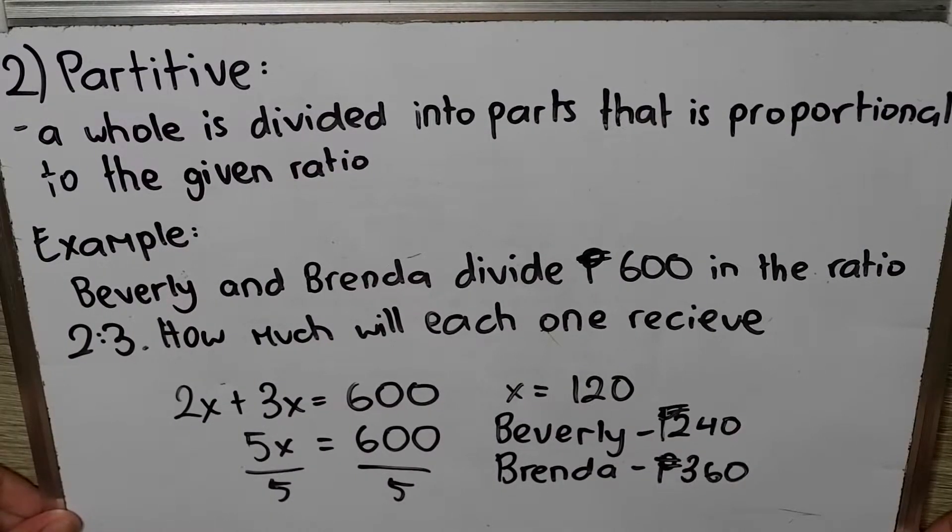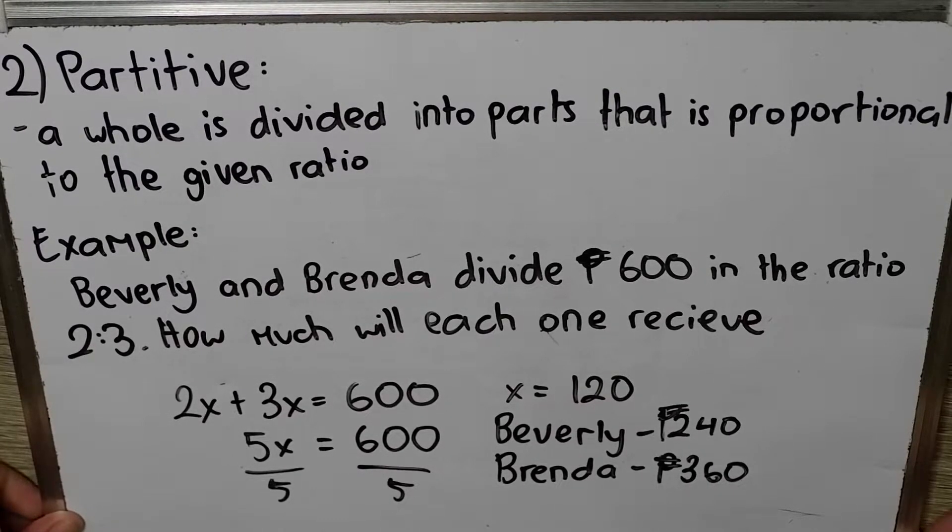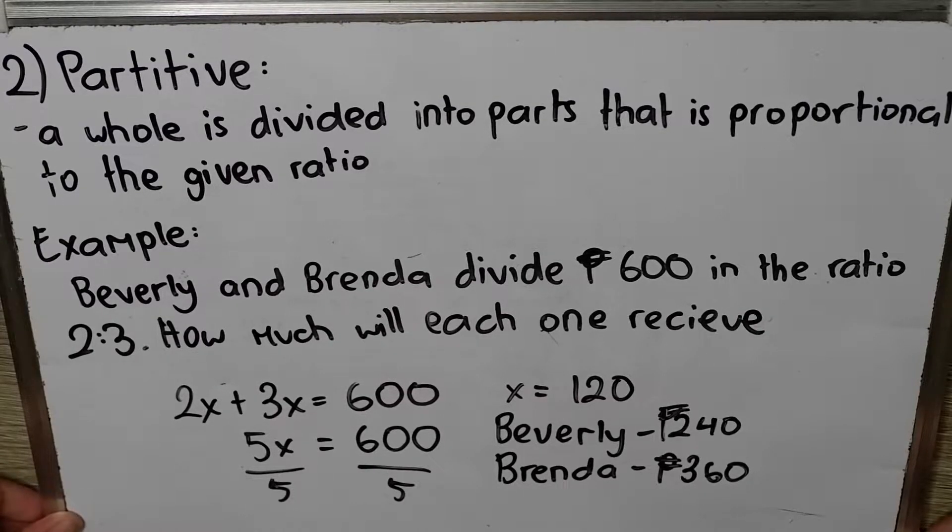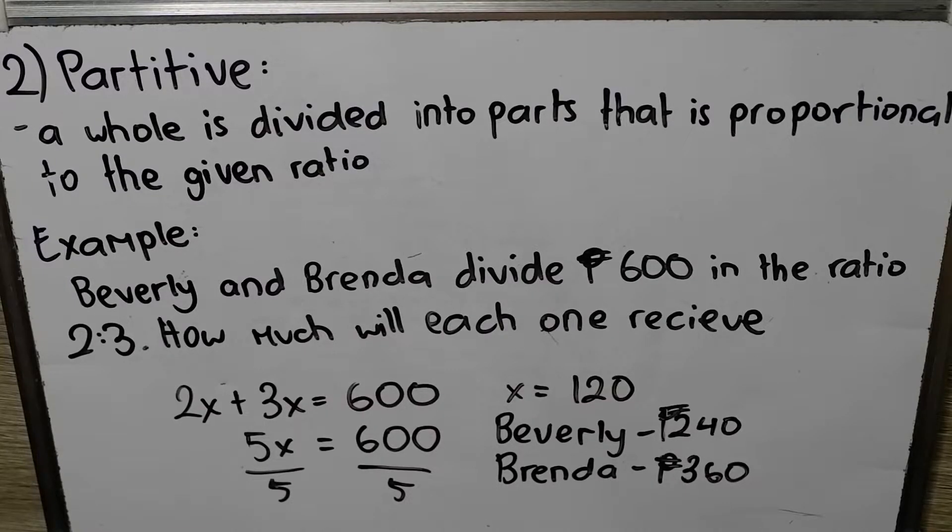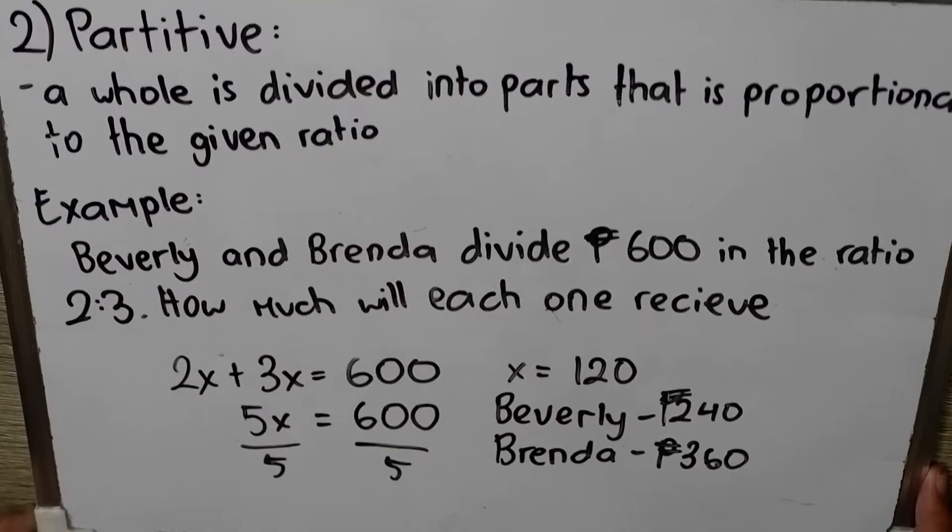The second one is partitive proportion. A whole is divided into parts that is proportional to the given ratio. An example of a problem is Beverly and Brenda divide 600 pesos in the ratio 2 is to 3. How much will each one receive? How much will each one receive? How do you solve this?